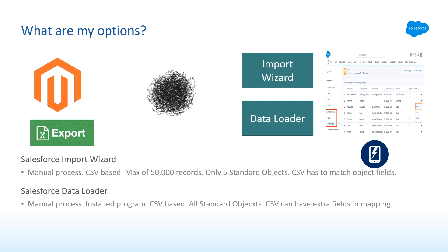Salesforce provides two applications you can use: one is called the Salesforce Import Wizard and the other the Salesforce Data Loader. The Import Wizard is a manual process — it's CSV based, meaning you click an import button and select a CSV file on your hard drive. It can only load a max of 50,000 records and you can only map to five of the standard objects in Salesforce. The Salesforce Data Loader is again a manual process but installed on your local machine. It loads CSV files, can map to all Salesforce objects, and has a field mapping feature where your CSV can have extra fields that don't map to Salesforce.